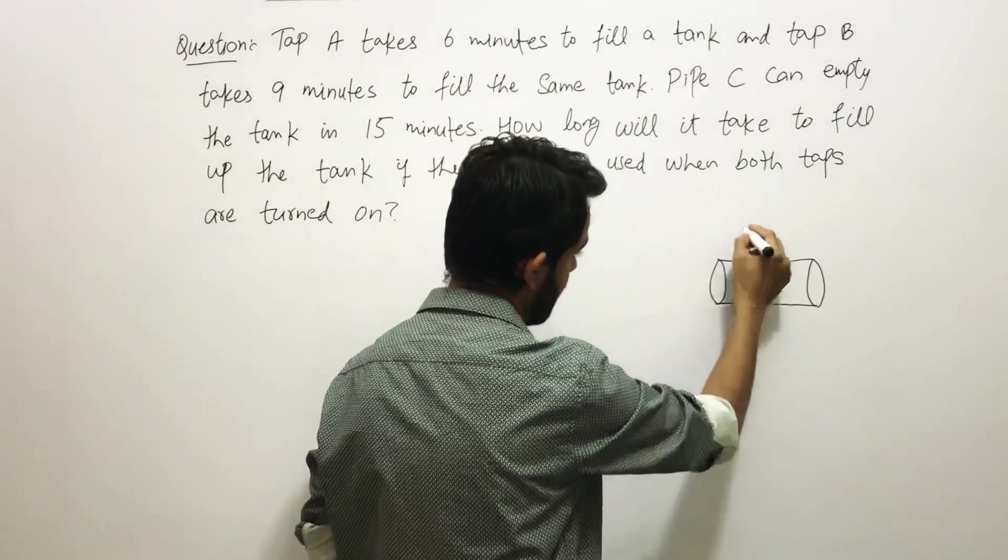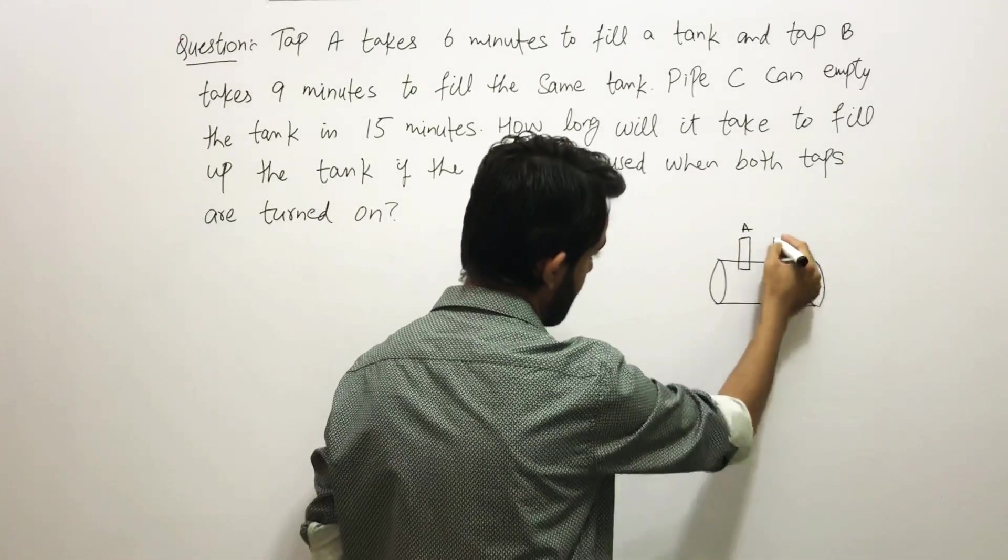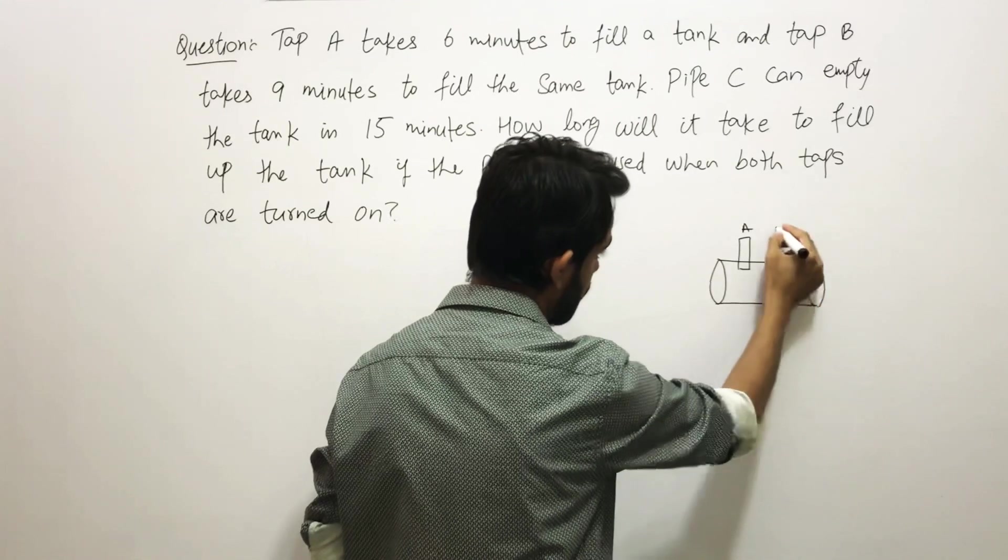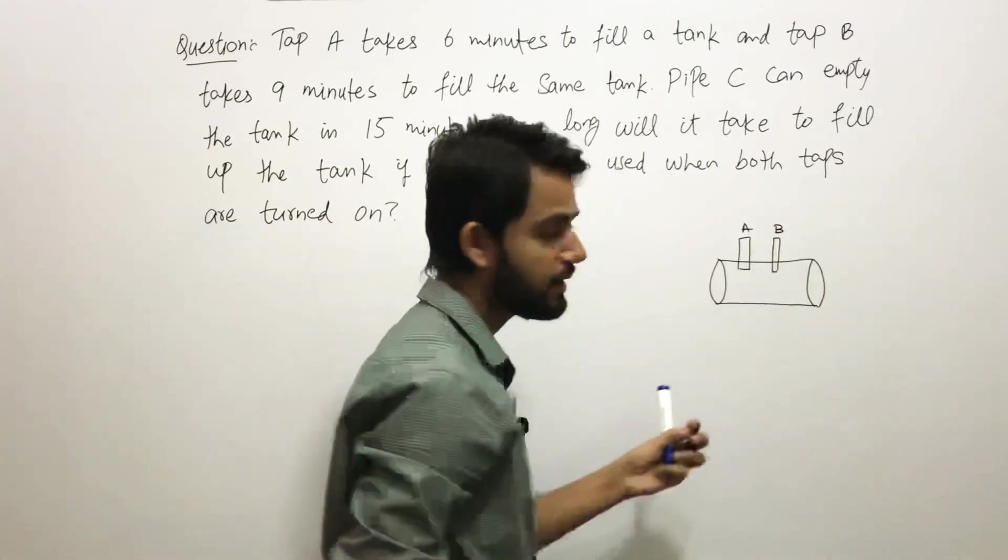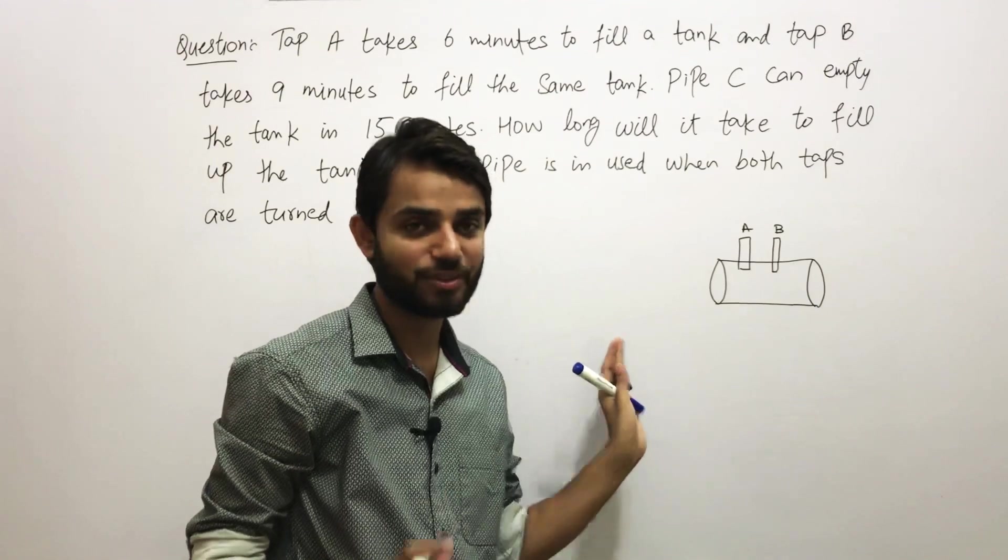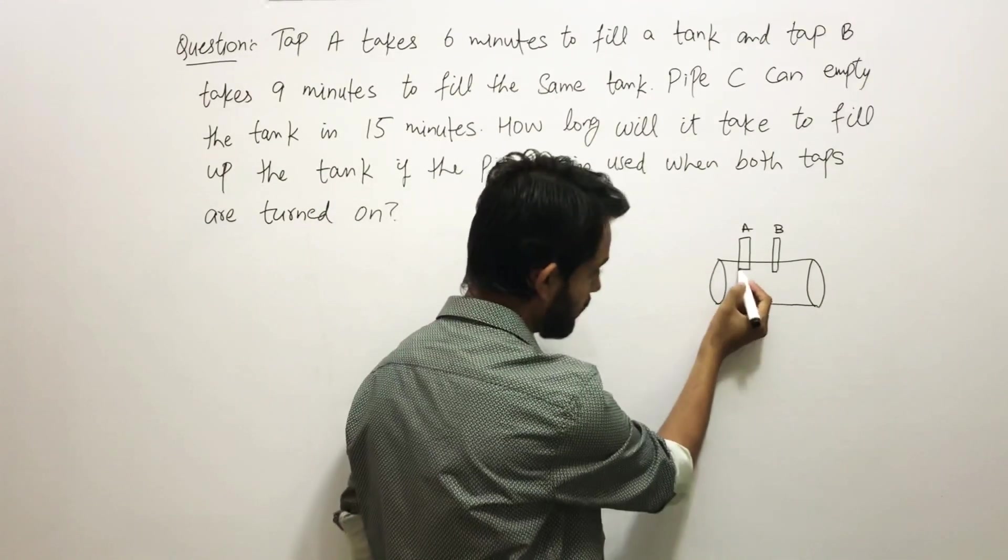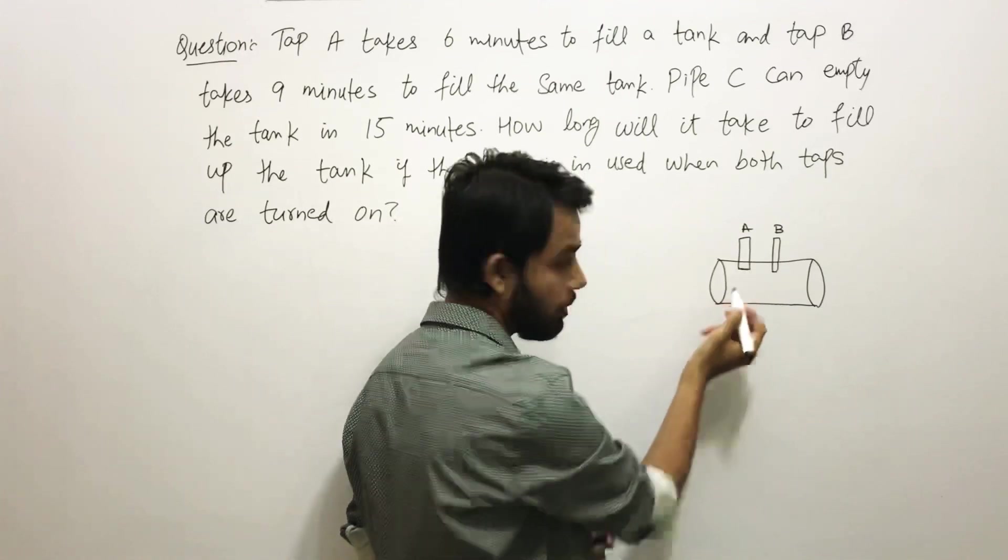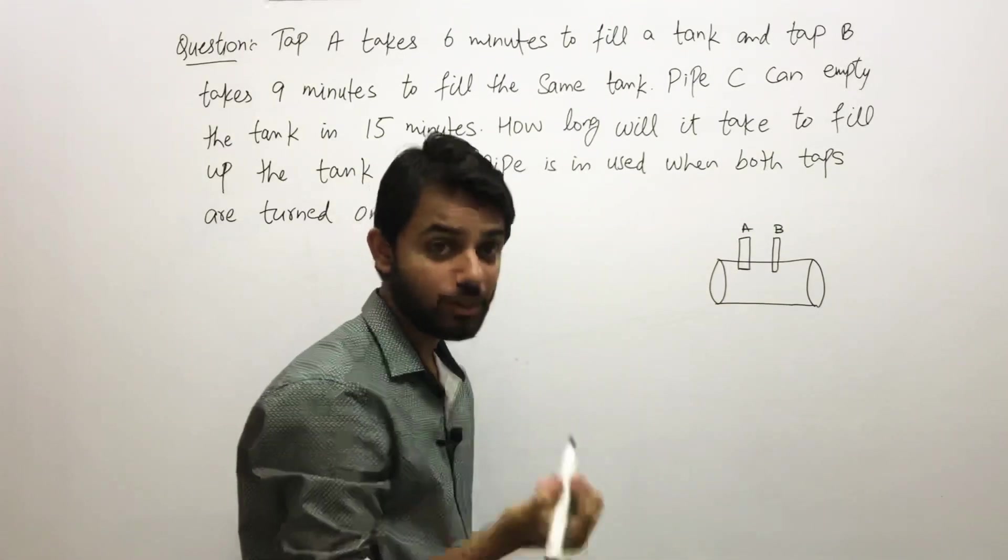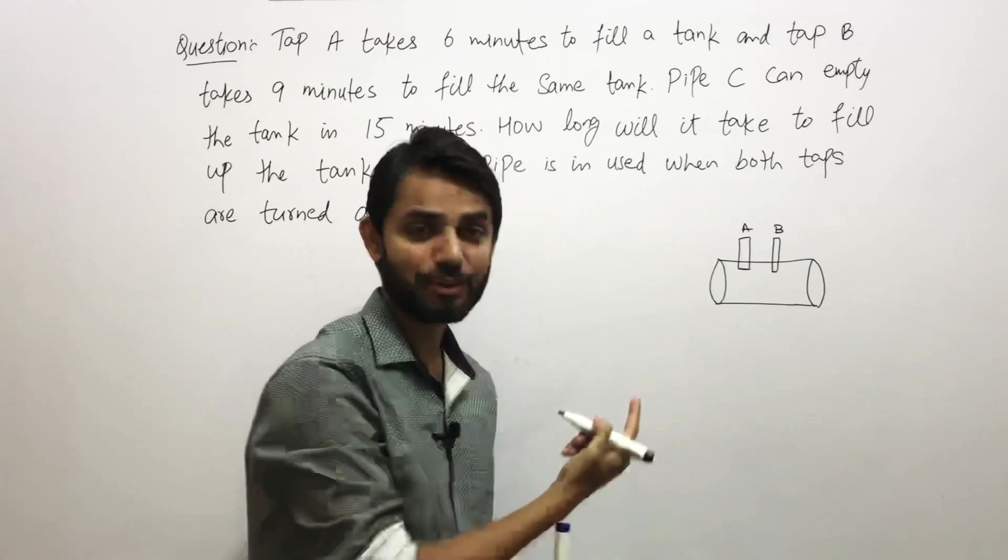This is your water tank. There are two taps—let's suppose this is your Tap A and this is your Tap B. You might be surprised how these taps are filling this water tank without having any water connection, so again ignore that part.